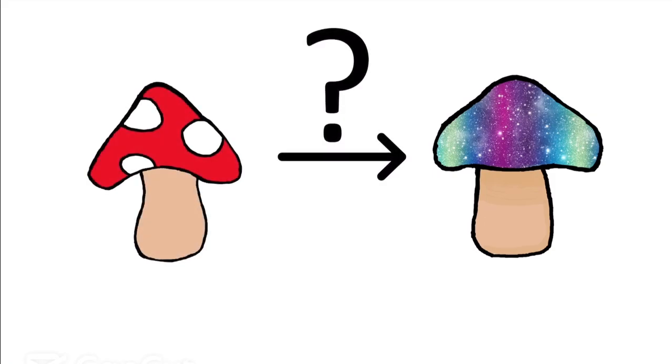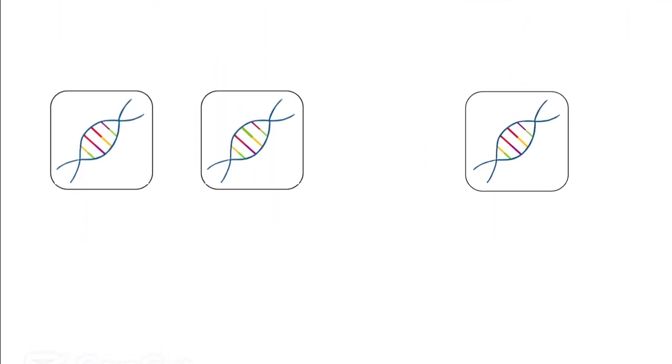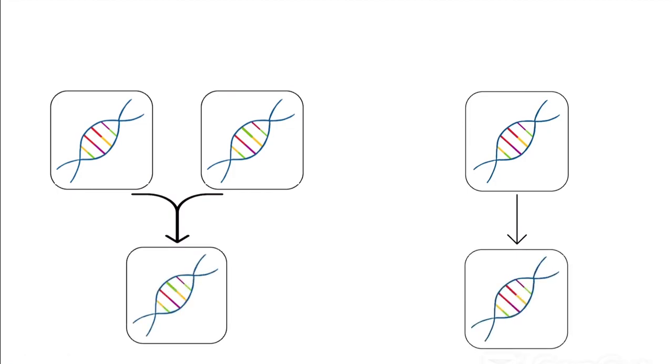organisms, there are two ways to gain genetic material: vertical gene transfer and horizontal gene transfer. Vertical gene transfer is between a parent and their offspring, whether that be sexually or asexually. It's the mechanism that gives us all the